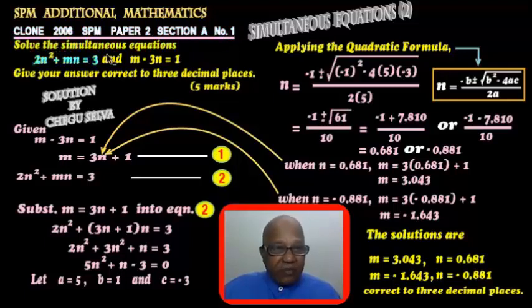You are asked to solve the simultaneous equations: 2n squared plus mn plus n equals 3, and m minus 3n equals 1. This is a non-linear equation; this is a linear equation. Give your answer correct to 3 decimal places. This question is worth 5 marks.